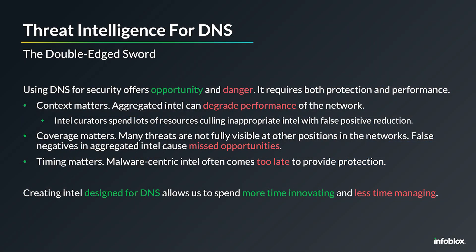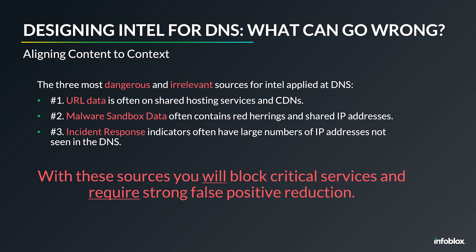Creating intel that's designed for DNS is about balancing performance and protection — protecting the network as much as possible while ensuring the high level of performance needed to support its customers. When we talk about designing intel for DNS, it's important to understand what can go wrong, as this can really help you in a decision-making process. The three most dangerous sources for intel are URL data, malware data, and incident response data.